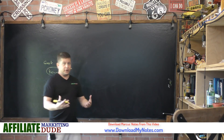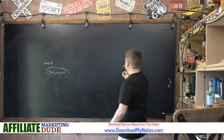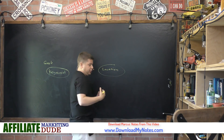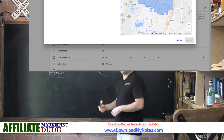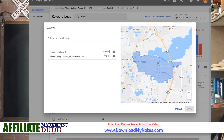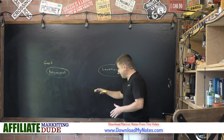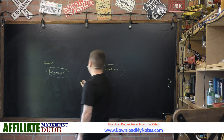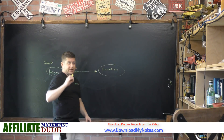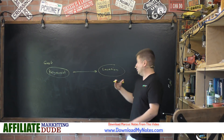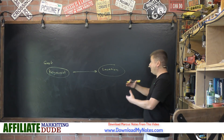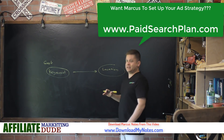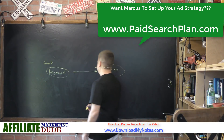The next thing we want to look at is location. You can geo-target your ads and say you only want people in the United States, or only people in Thailand, or only people in Winter Springs, Florida where Marcus lives. When you pair the keyword with the location, you can literally drill down to your perfect prospect. If you're a realtor in Winter Springs, Florida, your ad will only show when those people search for 'realtor' or 'homes for sale' — very cool.